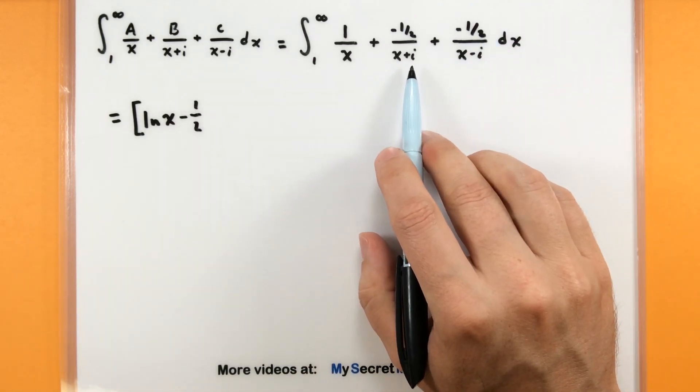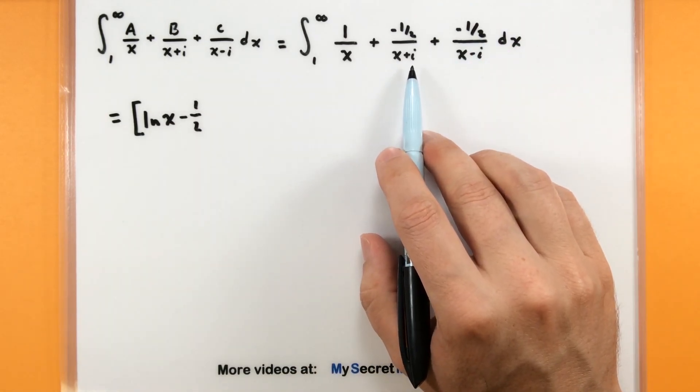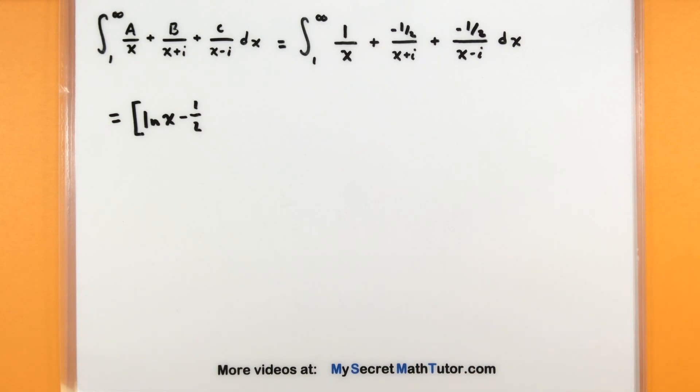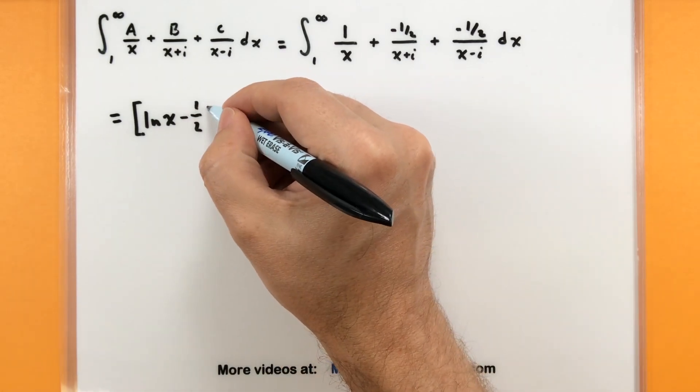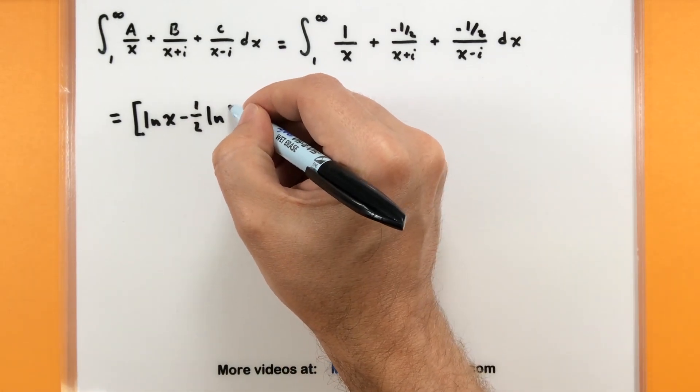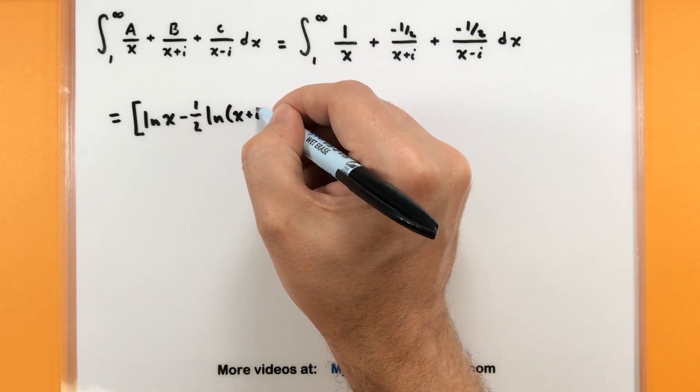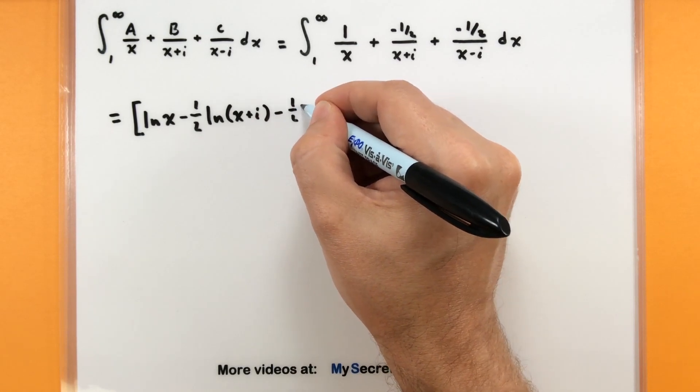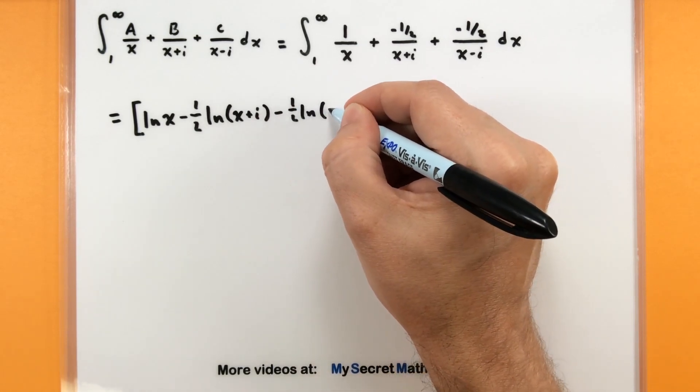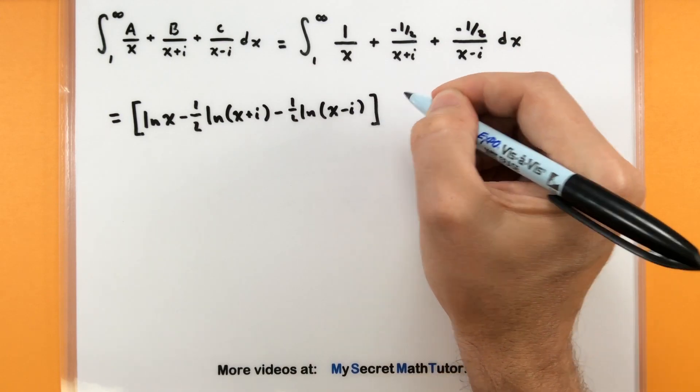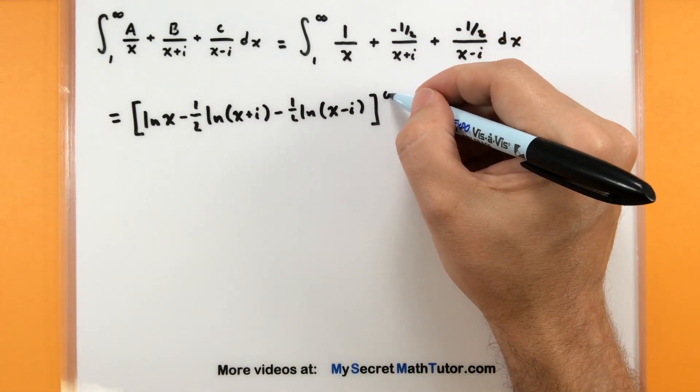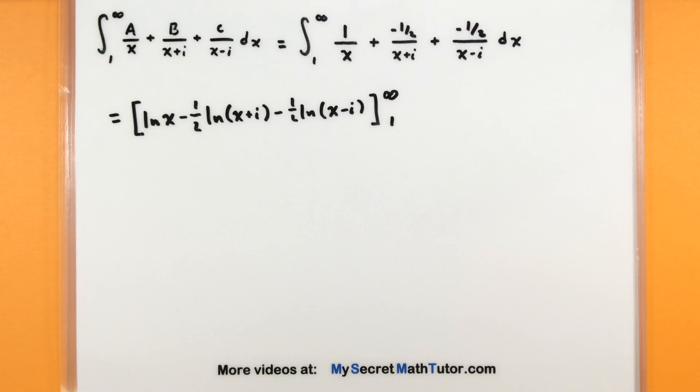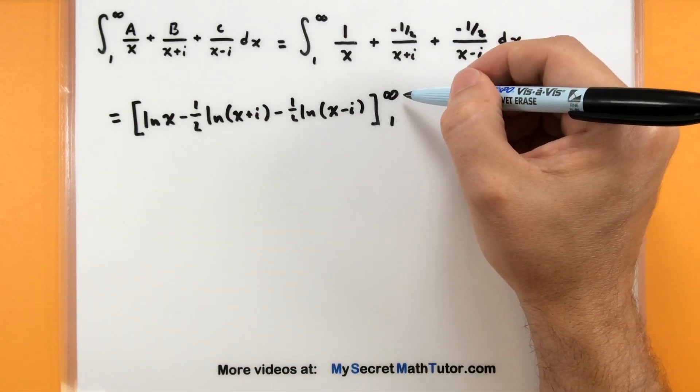So taking the antiderivative of one over x, that'll just give us a natural log of x. This negative one half is a constant, so I could really move it out in front. Now here's the interesting part. You might be worried what to do with that antiderivative of i, but it is a number just like the number five or the number six, so it's not really going to affect taking that antiderivative. No problems there. So we'll just deal with the natural log of x plus i. See, no problems, nothing to worry about. And the last one has a negative one half that can come out front. Antiderivative x minus i. And we need some bounds on this. We are still evaluating this from one to infinity.